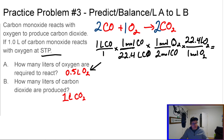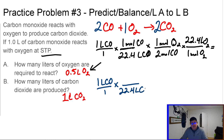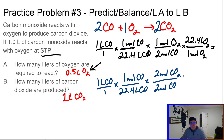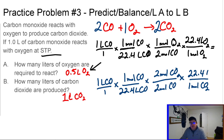Now the last bit. The beginning part is the same: 22.4 liters of CO equals one mole of CO. Two moles of CO produces two moles of CO2. For every two moles of CO2 we get 22.4 liters of CO2. Everything cancels out and you get the answer of one liter of CO2.